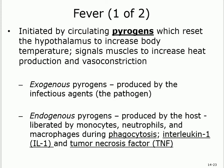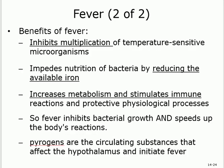Pyrogens can be exogenous — coming from outside, like a pathogen invading us and producing chemicals — or endogenous, from inside our body, secreted by monocytes, neutrophils, or macrophages. Endogenous factors include interleukin-1 and tumor necrosis factors.